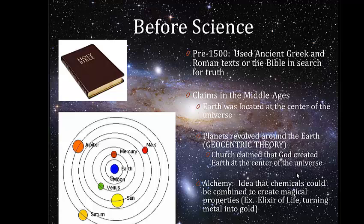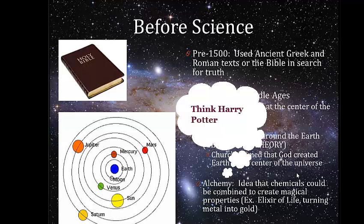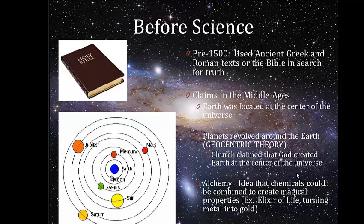We also had this idea called alchemy, which basically means that scientists at this time were trying to take chemicals that already existed and try to combine them to create magical chemicals. Things like the elixir of life, which would help you live forever, or by turning metal into gold.